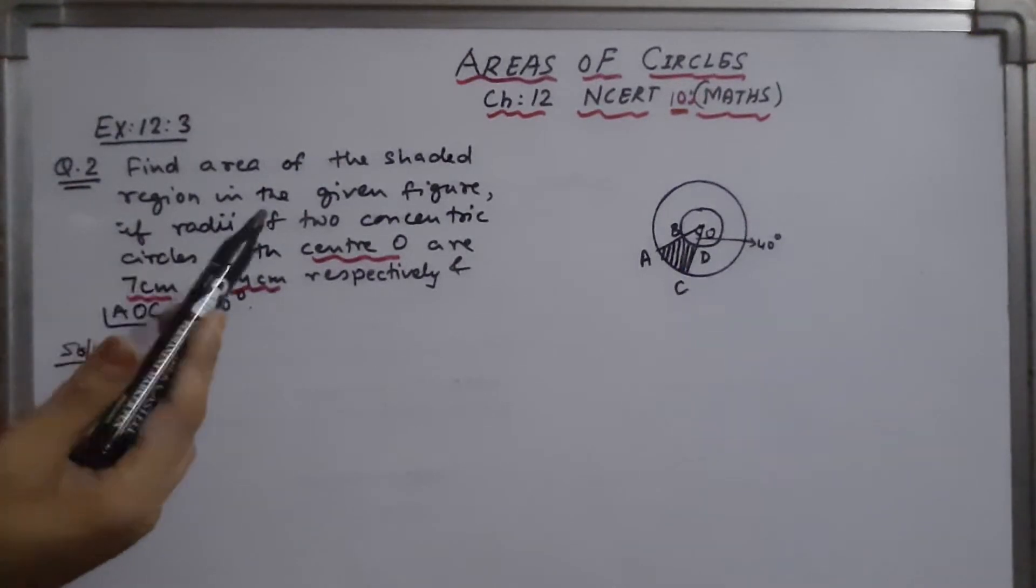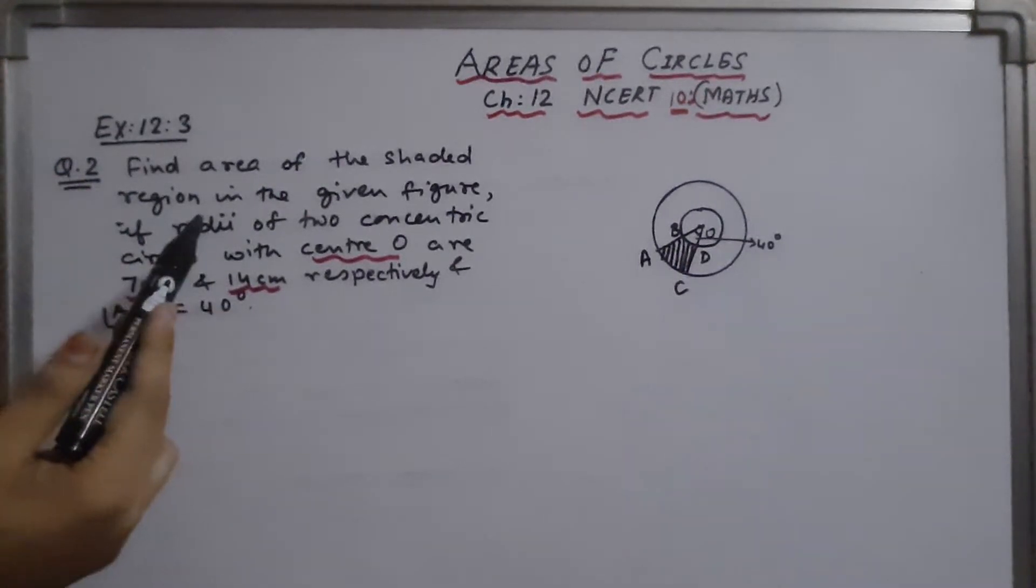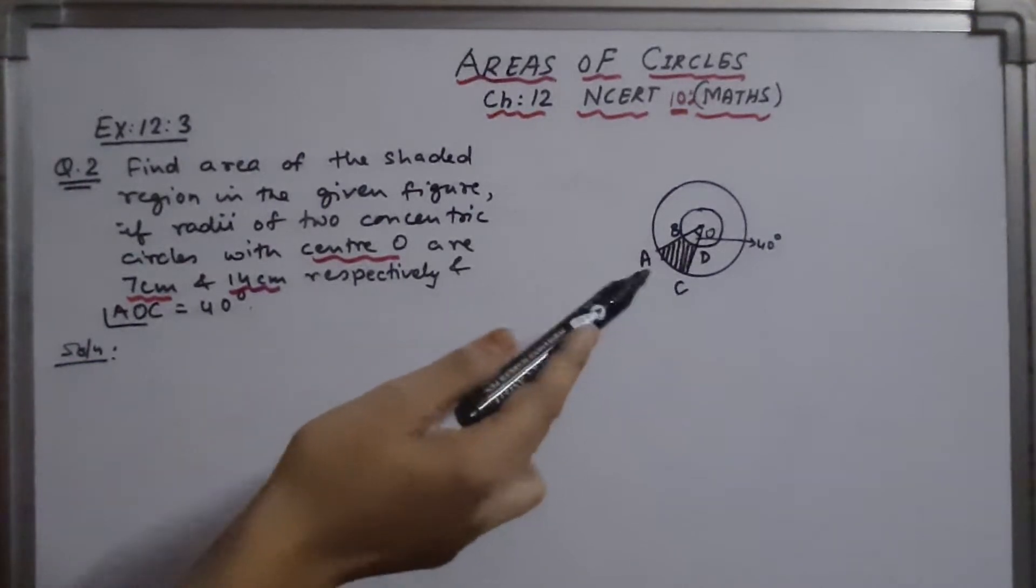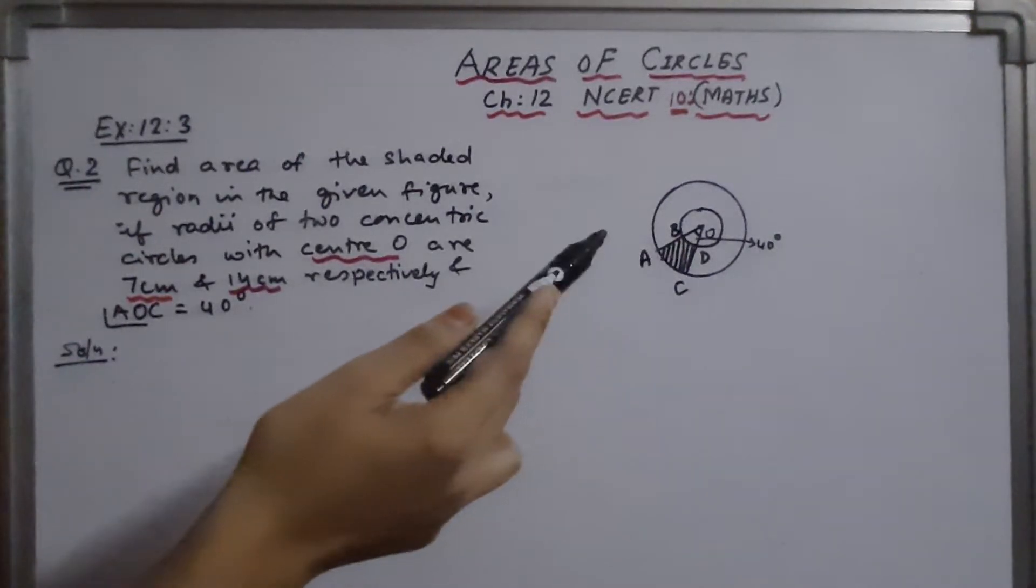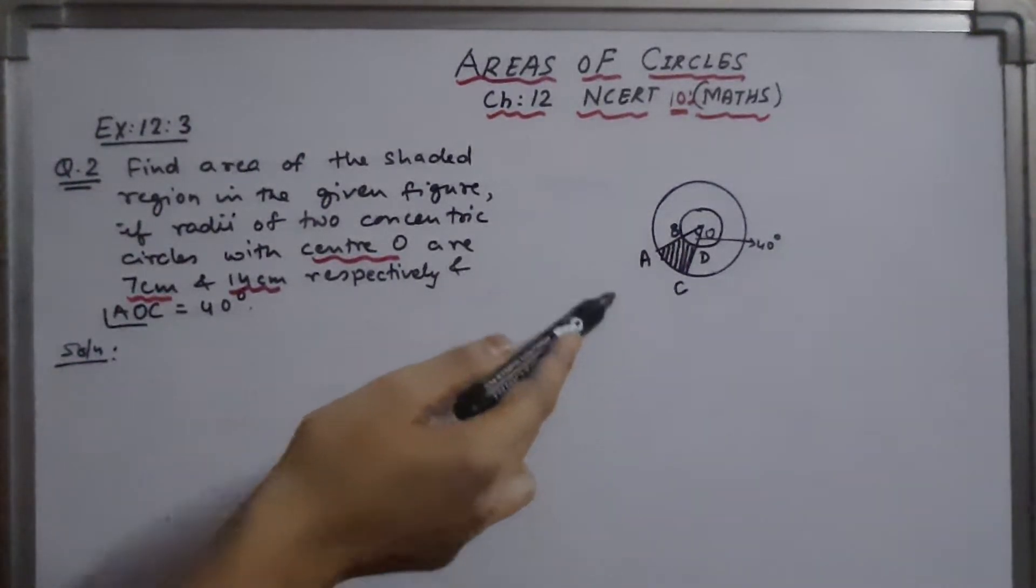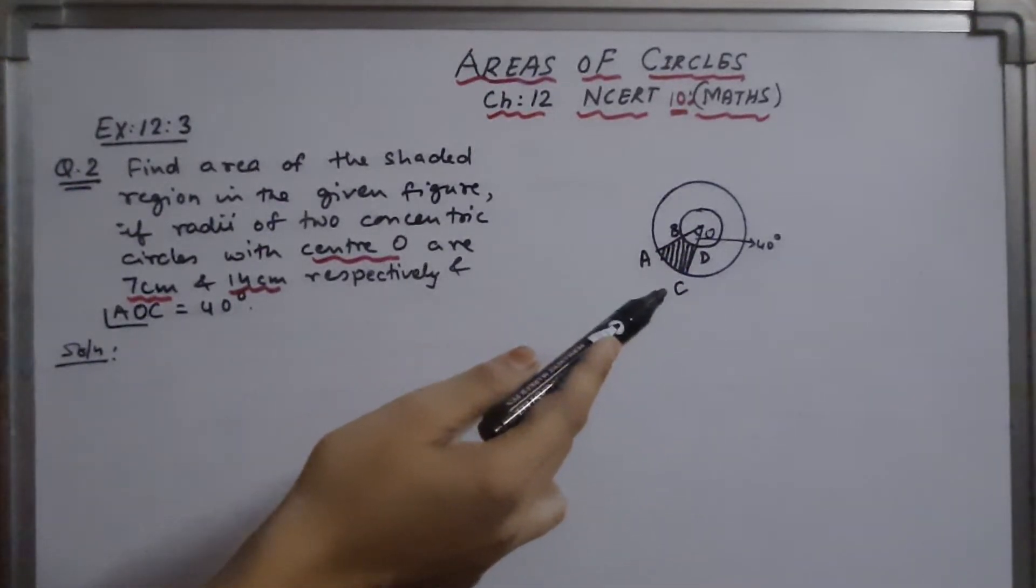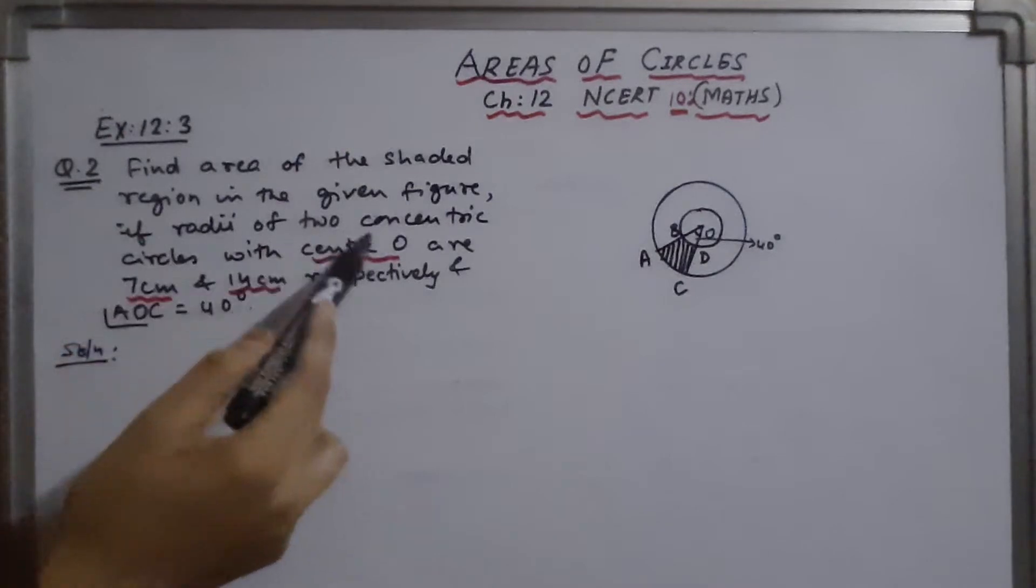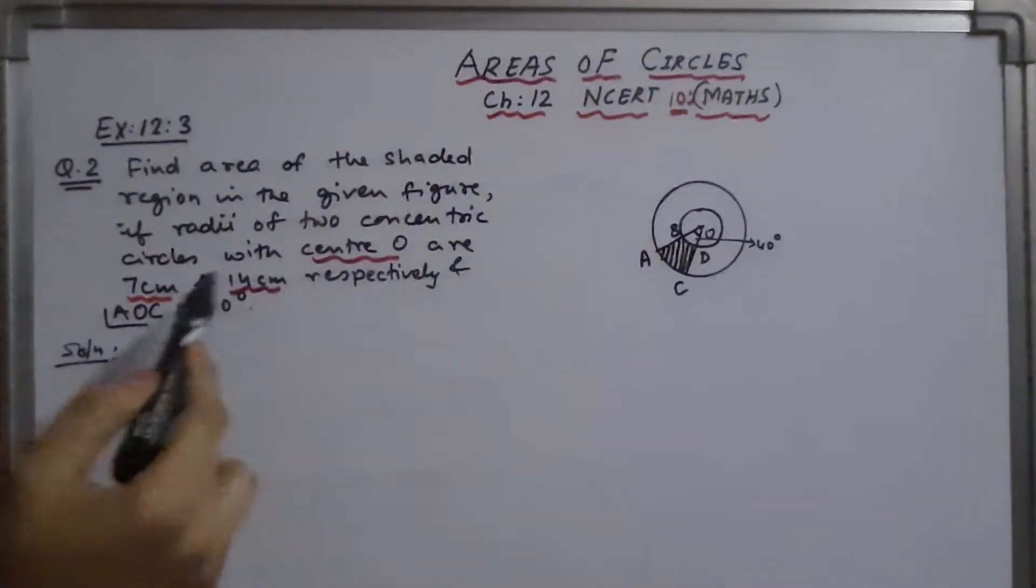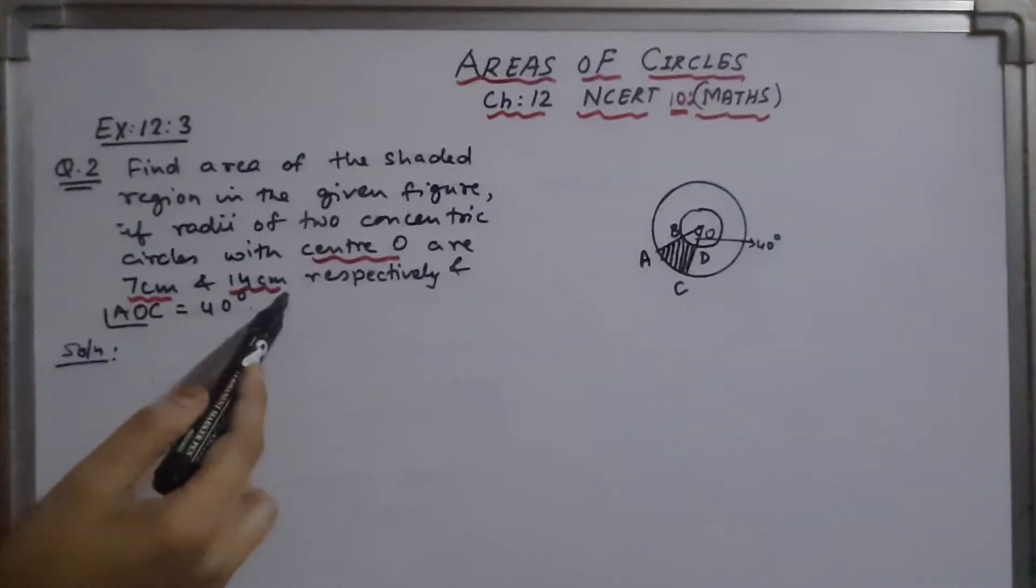The question is: find the area of the shaded region in the given figure. The figure is given. These are two concentric circles AOC and BOD, and theta is the angle, that is 40 degrees. And the two radii of the concentric circles are 7 cm and 14 cm.